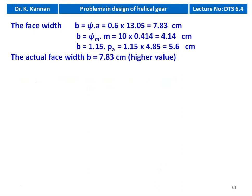Face width calculation using three equations: B = psi × A = 0.6 × 13.05 = 7.83 cm; B = psi_m × M = 10 × 0.414 = 4.14 cm; B = 1.15 × axial pitch = 1.15 × 4.85 = 5.6 cm. The highest value is 7.83 cm, so face width B = 7.83 cm.